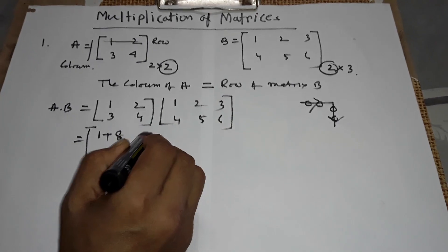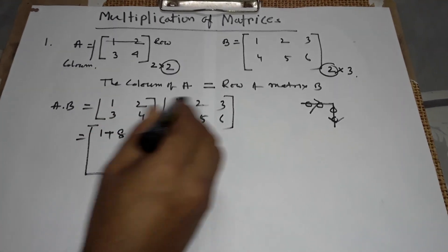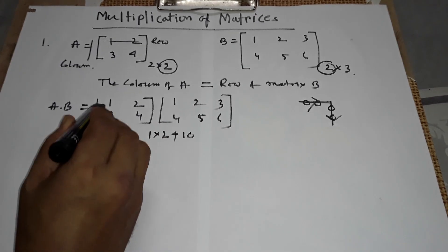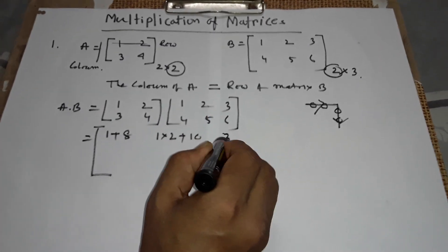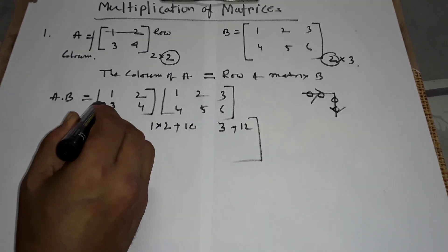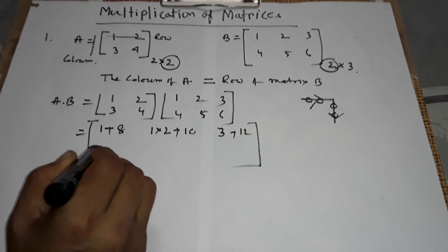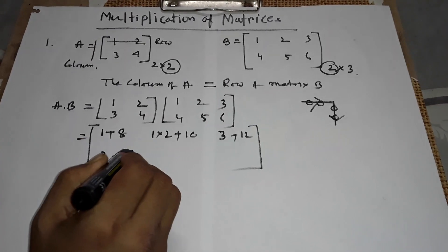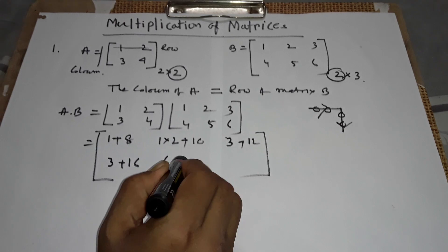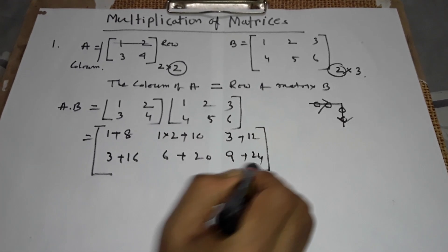Next, 1 into 2 plus 2 into 5, 10. Next, 1 into 3, 3 plus 2 into 6, 12. Again, this versus this: 3 plus 16, 6 plus 20, 9 plus 24.